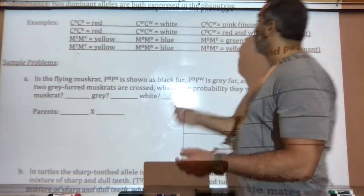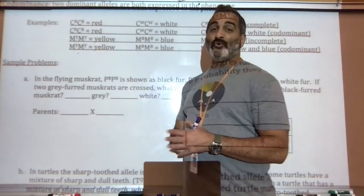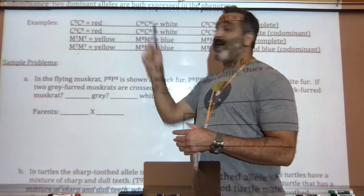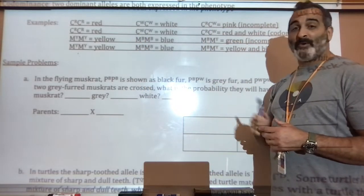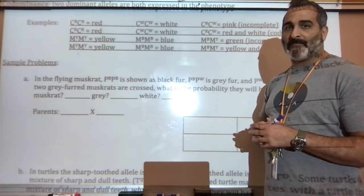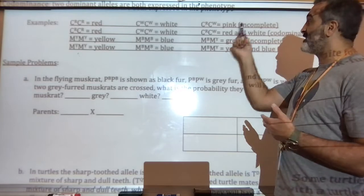So the first example is showing you incomplete dominance. And I already used this example. There's two capital R's is red. Two capital W's is white. A capital R, a capital W, or an uppercase R, uppercase W, same thing, would give you pink, a mixture of the two colors. That is incomplete dominance.